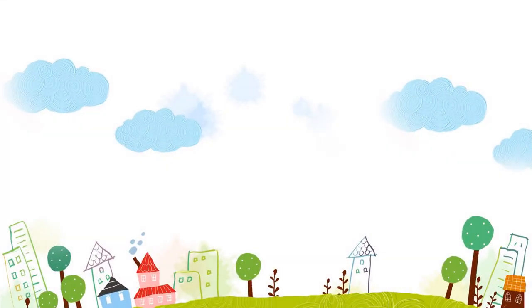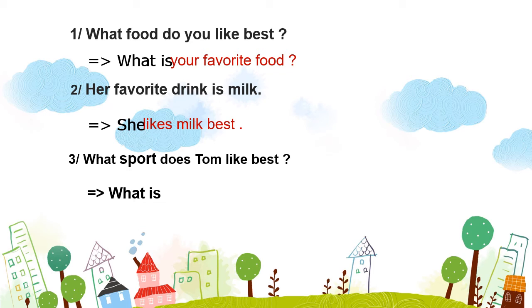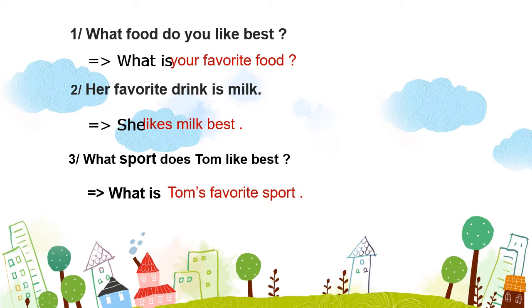Chúng ta sẽ tiếp tục với bài tập về mẫu câu yêu thích nhất. Câu thứ nhất: "What food do you like best?" – Bạn thích thức ăn nào nhất? Viết lại: "What is your favorite food?" – Thức ăn yêu thích nhất của bạn là gì? Câu thứ hai: "Her favorite drink is milk." – Thức uống yêu thích nhất của cô ta là sữa. Viết lại: "She likes milk best." – Cô ấy thích sữa nhất. Câu thứ ba: "What sport does Tam like best?" – Thể thao nào Tâm thích nhất? Viết lại: "What is Tam's favorite sport?" – Thể thao yêu thích nhất của Tâm là gì?